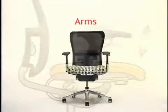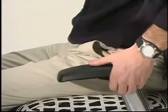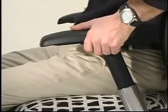Arm Height Adjustment raises and lowers the arms to keep the user's shoulders in a neutral posture. To change the height of the armrest, pull up on the lever and slide the armrest up or down.